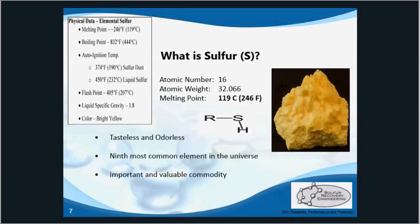So what is sulfur? Sulfur is found elementally in minerals, ores, coal, mineral springs, and volcanic regions. It is also found and recovered from natural gas, crude oil, and large underground deposits, which would be sulfur mining.